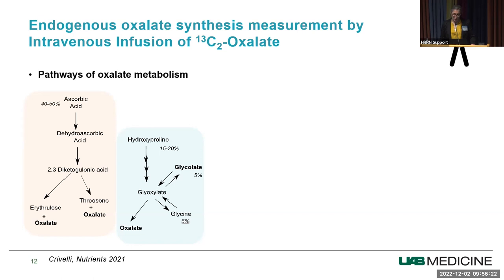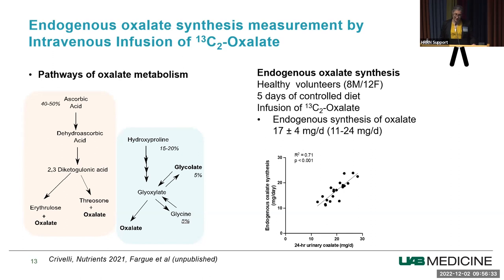A study we just finished at UAB measured endogenous synthesis in healthy volunteers placed on a five-day controlled low-oxalate diet, who received an infusion of carbon-13 oxalate. On average, endogenous synthesis was 17 milligrams per day, but varied in a two-fold range. The good news is that endogenous synthesis correlated well with 24-hour urine oxalate on the low-oxalate diet.